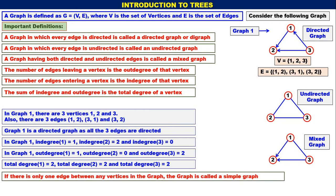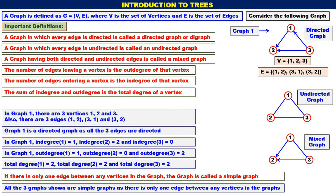If there is only one edge between any vertices in the graph, the graph is called a simple graph. All three graphs shown in the examples are simple graphs because there is only one edge between any vertices in these three graphs.